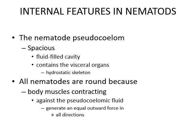All nematodes are round because body muscles contracting against the pseudocoelomic fluid generate an equal outward force in all directions. Just consider a balloon — if you pour air into the balloon, this air will inflate the balloon in all directions. Just like that balloon, roundworms are rounded.